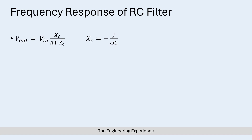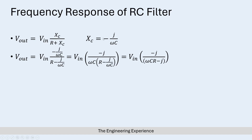Similar to what we've done previously, we can describe V_out as equal to V_in multiplied by the impedance of the capacitor (X_C) divided by the total impedance of the circuit, which is R plus X_C. The impedance of the capacitor in this case is equal to minus J over omega C. Plugging that impedance value in, we replace X_C with this expression.